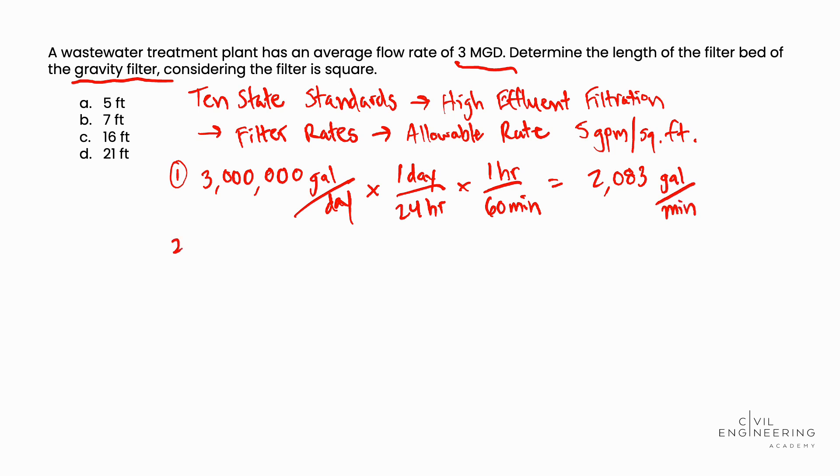Then in step 2, we're going to calculate the required surface area using the maximum allowable flow rate we found on the 10 state standards. So the area is equal to the gallons per minute flow rate that we calculated in step 1 of 2,083 gallons per minute.